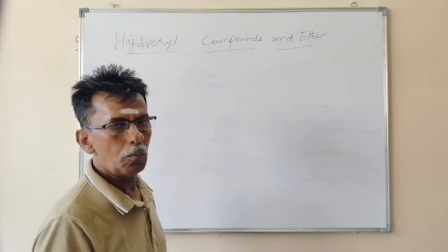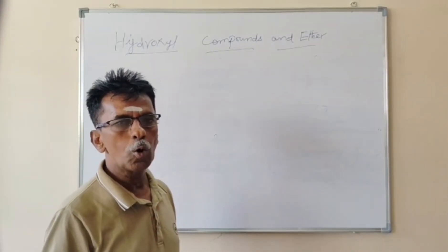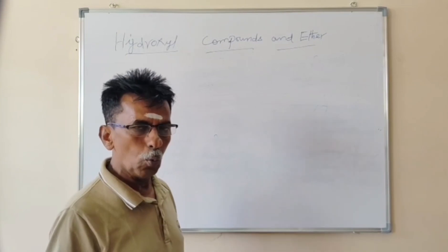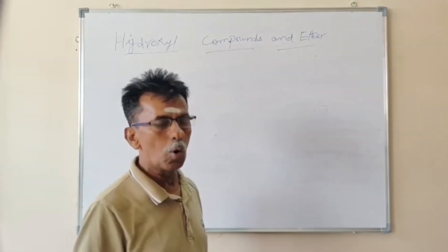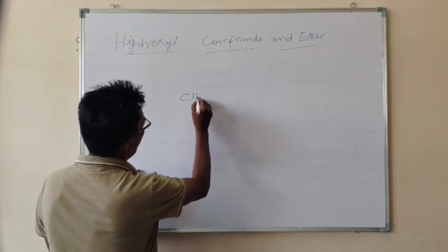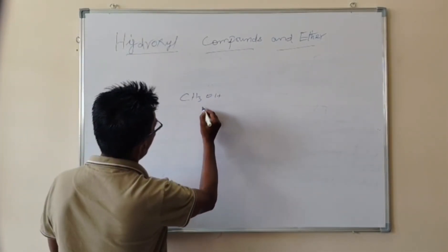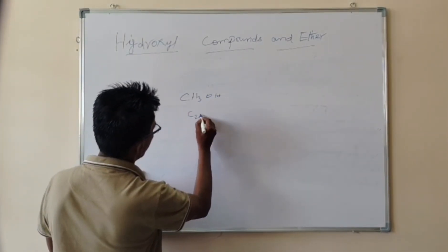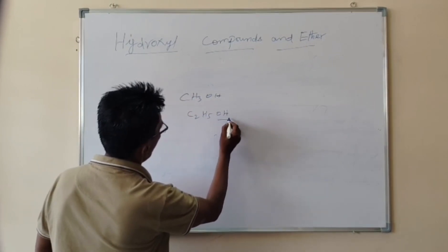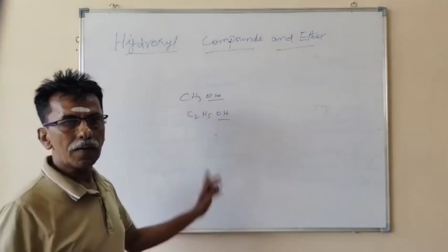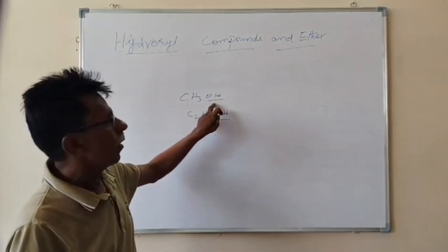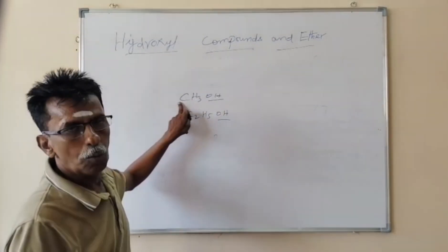What is Monohydric Alcohol? Mono means one. If any organic compound containing only one OH group, that is called the Monohydric Alcohol. These are the examples for the Monohydric Alcohol, where the OH group is compared with the Alkyl group.